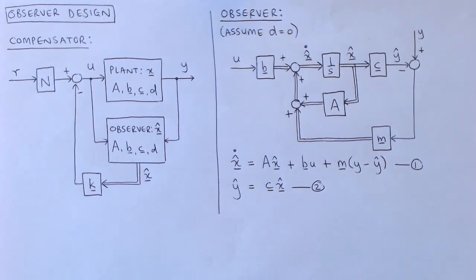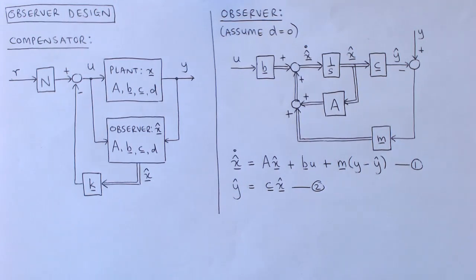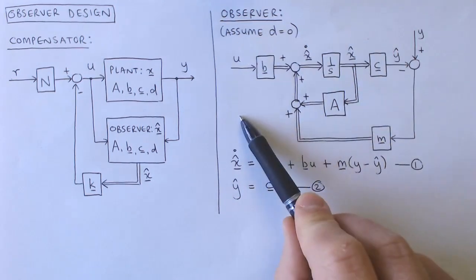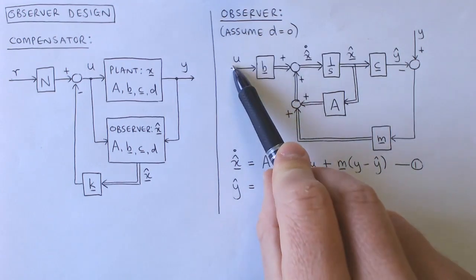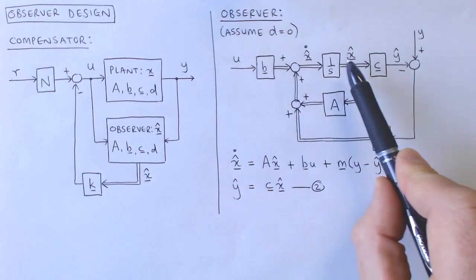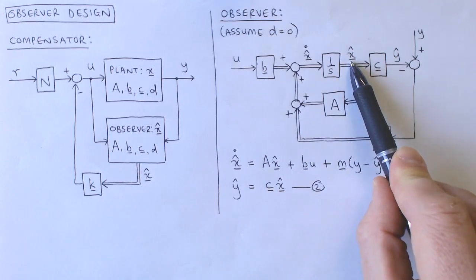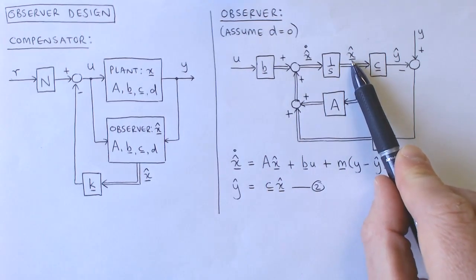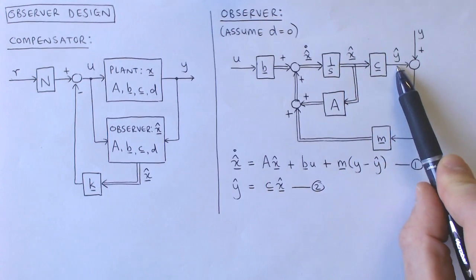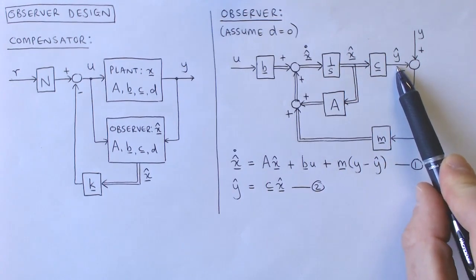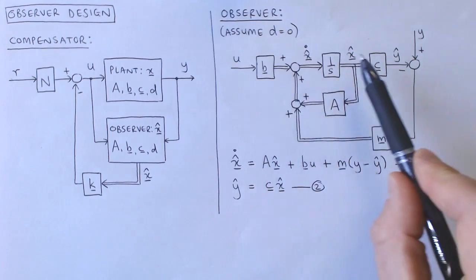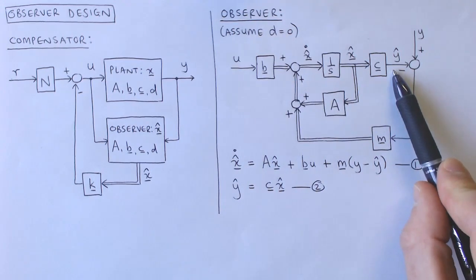Firstly, the response of the plant to the input is simulated by using the plant model, which is done in this part of the observer. U is the plant input, the estimated states X hat are the states of the simulated plant, Y hat is the output of the simulated plant, and the system matrices A, B, and C come from the plant model.